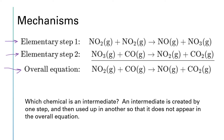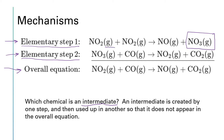The elementary steps are the actual steps in the mechanism. An elementary step actually shows you exactly how the molecules come together to react in individual steps. This question at the bottom is asking us: what chemical is an intermediate? An intermediate is something that gets created in one step but then used up in a later step, so it does not appear in the overall reaction. The example of the intermediate in this mechanism is NO3. NO3 gets made in the first step and then it gets consumed in the second step.